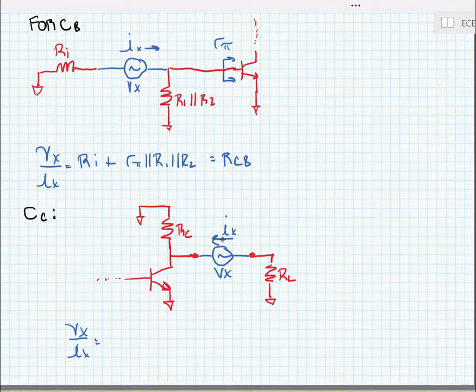And here we're going to find that VX over IX is equal to RL plus RC in parallel with RO from the transistor. Now above, I noted that the early voltage was equal to infinity, which means that the output resistance of the transistor is also infinity. So we can neglect it in this calculation. So the total here is our value RC, RCC.